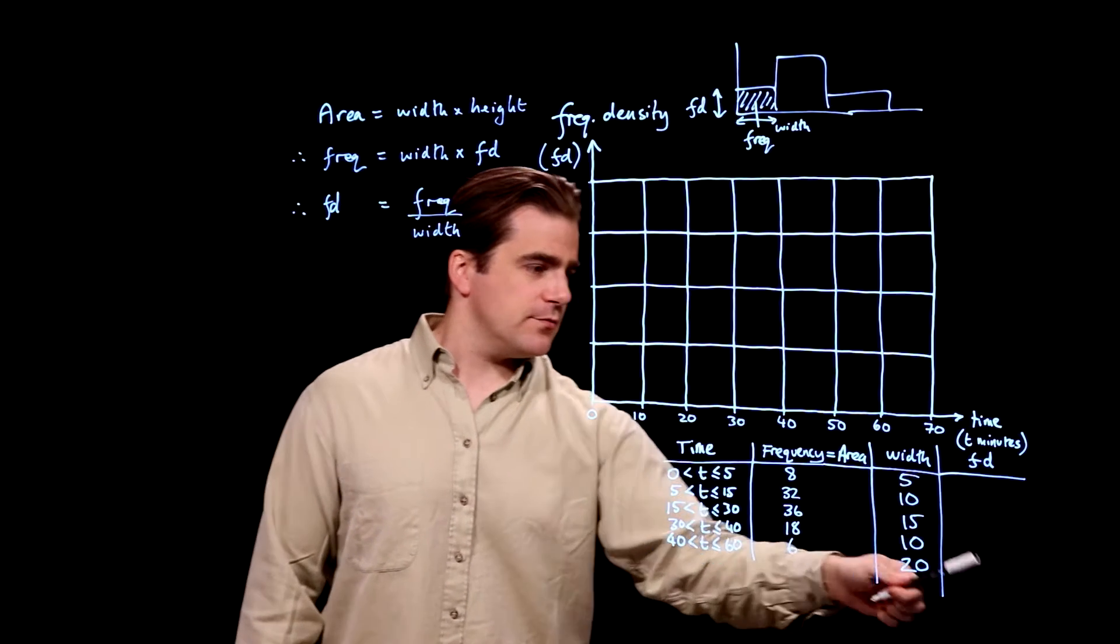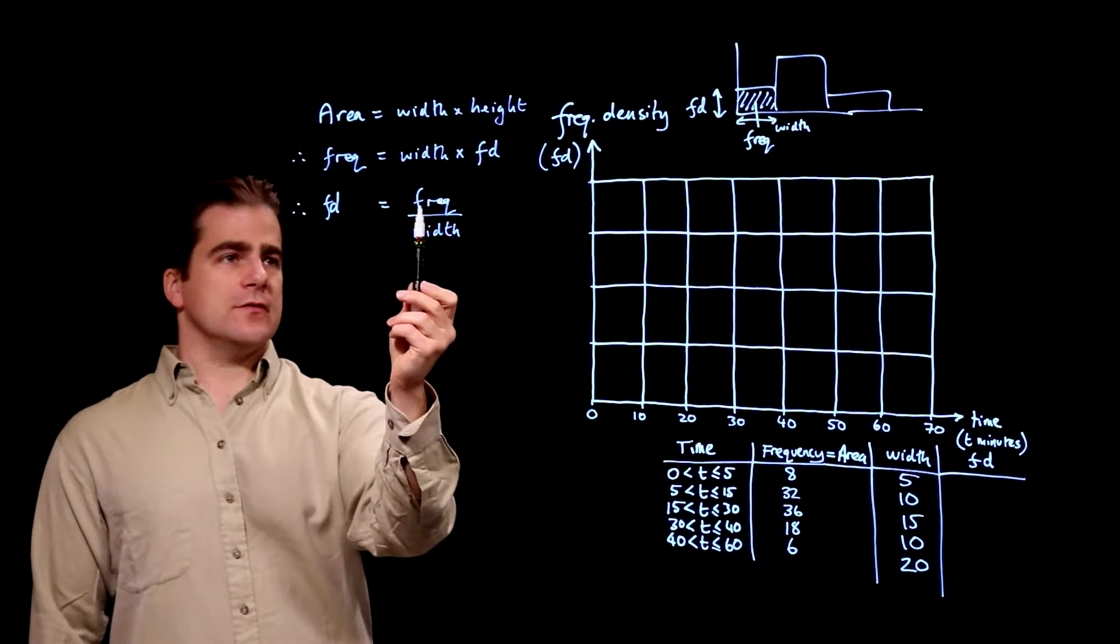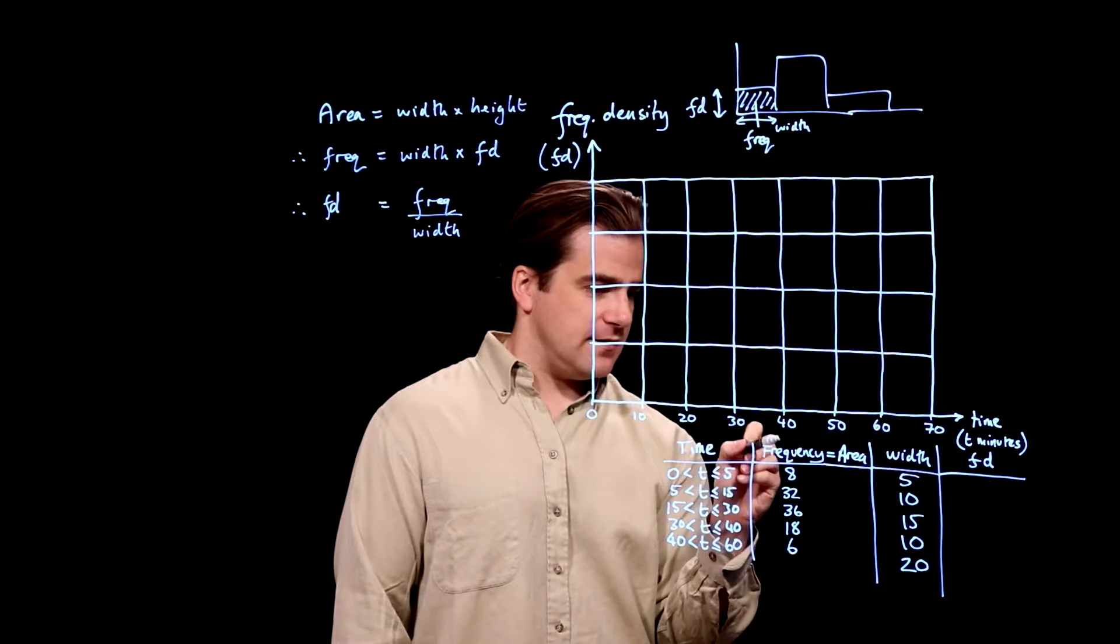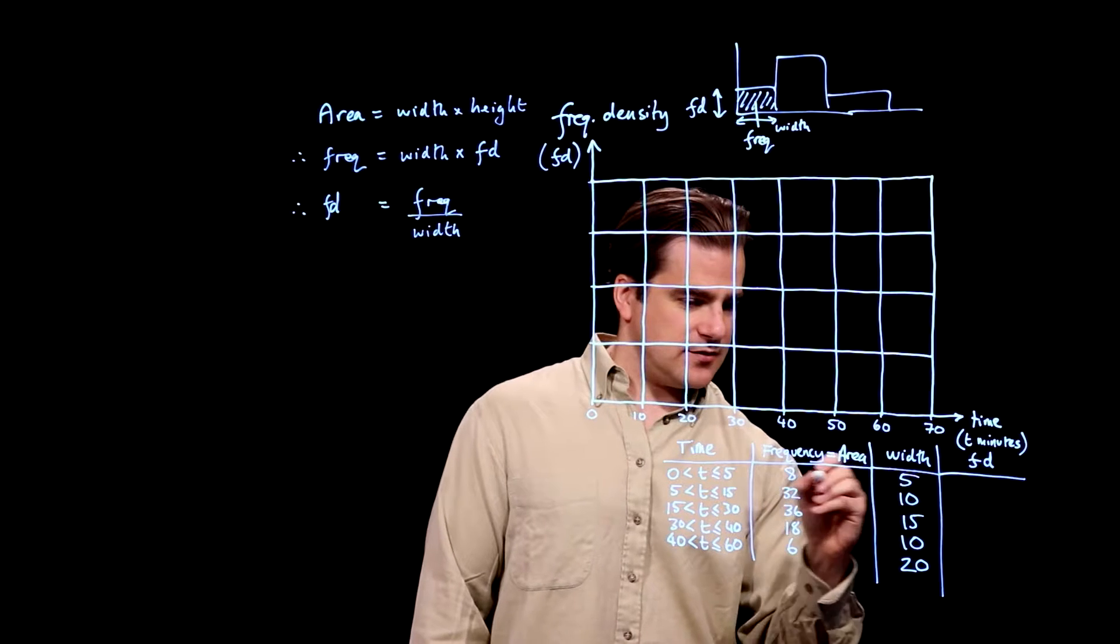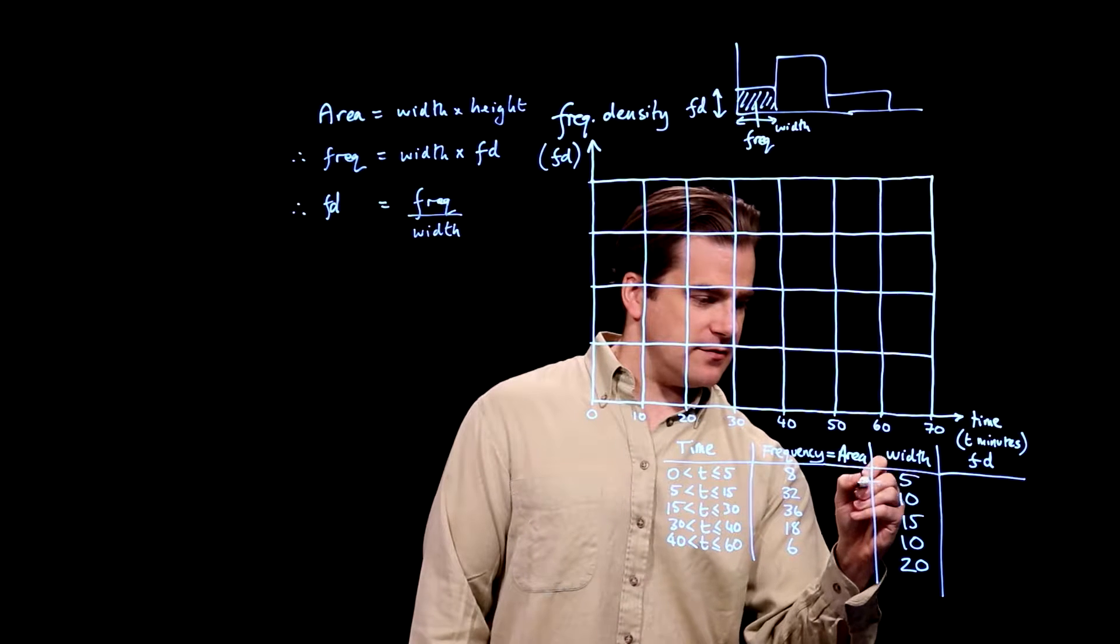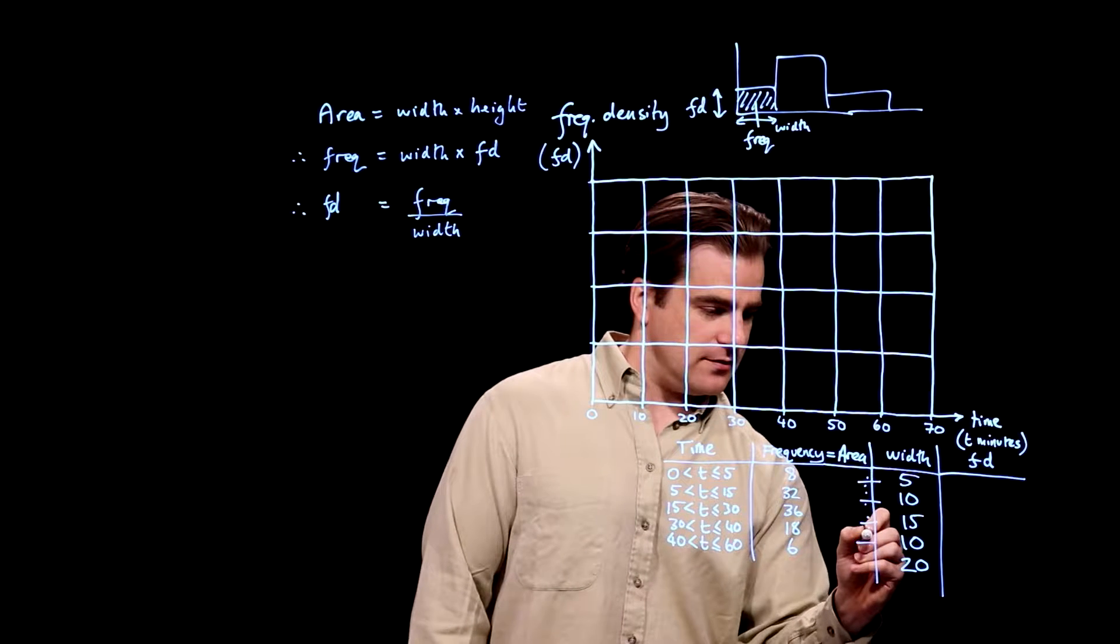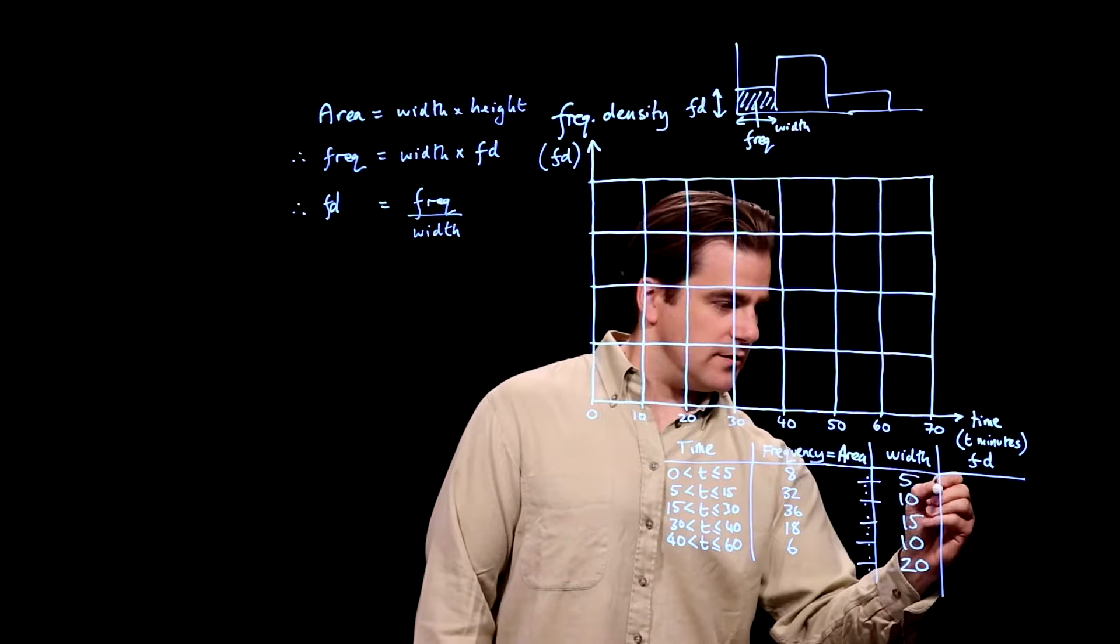So therefore, to fill in this column, we do frequency divided by width, which is that divided by the width. So we're going to do that divided by that, that divided by that, and so on. To give that.